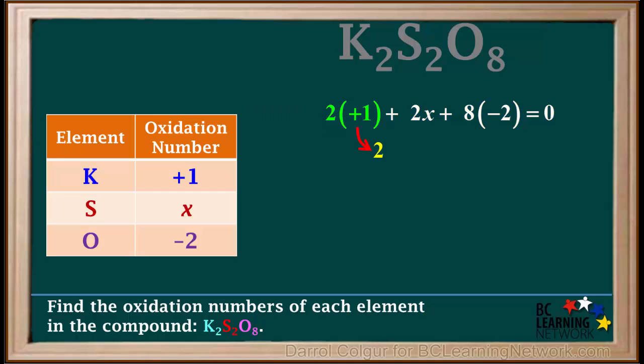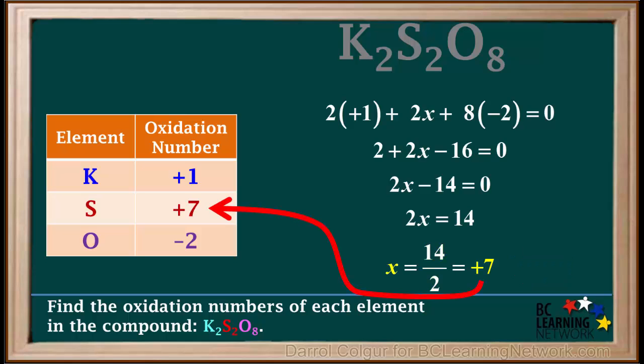2 times positive 1 is equal to 2, and 8 times negative 2 is equal to negative 16. So the equation now is 2 plus 2X minus 16 is equal to 0. Negative 16 plus 2 is negative 14, so we can say that 2X minus 14 is equal to 0. Adding 14 to both sides gives us 2X equals 14, and dividing both sides by 2 gives us X equals 14 divided by 2, which is equal to positive 7. So the oxidation number of sulfur is positive 7.